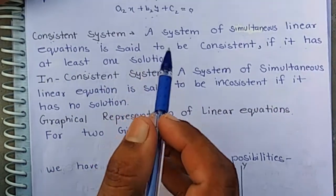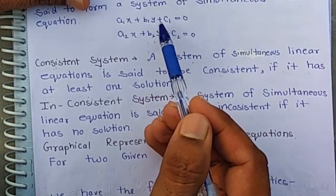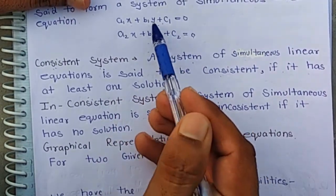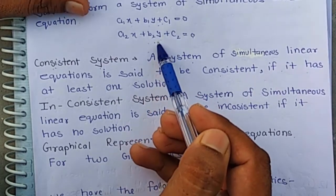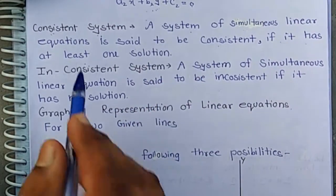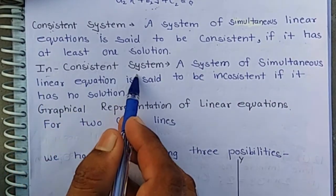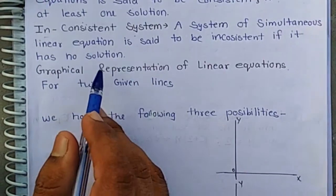If these two equations have no solution, then they form an inconsistent system.